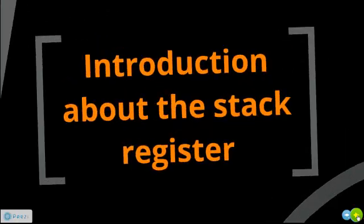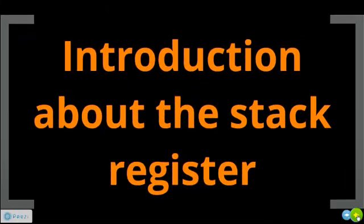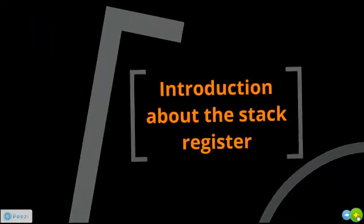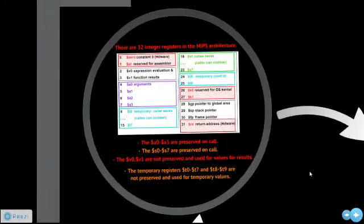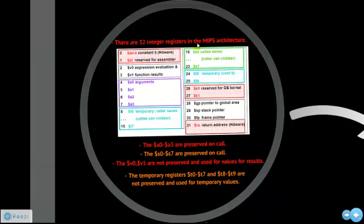First, we will have a brief introduction about the stack register. There are 32 integer registers in the MIPS architecture. This is the register naming convention. The registers marked in red, which are 0, 1, 26, and 27, are generally reserved registers, which means that you cannot change the value in these registers.